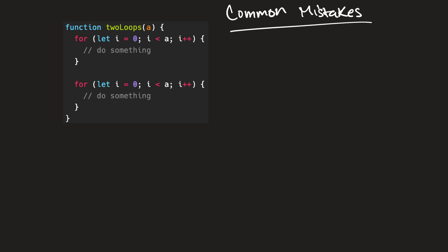The first common mistake: when you first start out with big O, you might see a function that has two for loops and instinctively assume that this function is O(n²) time complexity, because you see two for loops. But actually, as we've learned, O(n²) means that for each iteration up until the size of our input, we're going to iterate all the way through an additional for loop up until the size of our input. So what does it mean if we have two for loops that aren't nested?